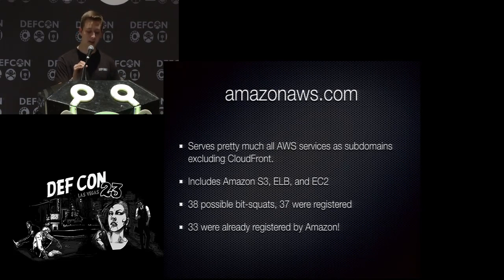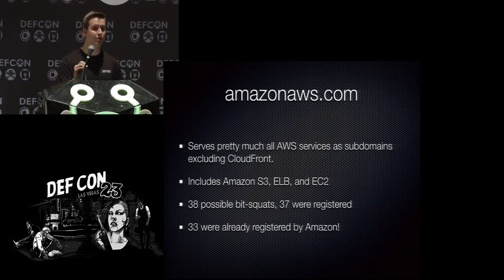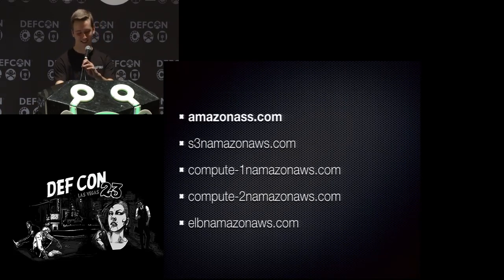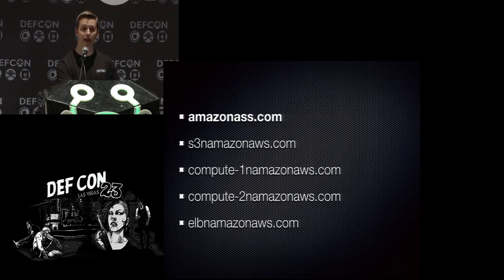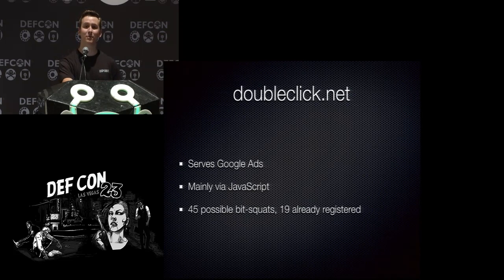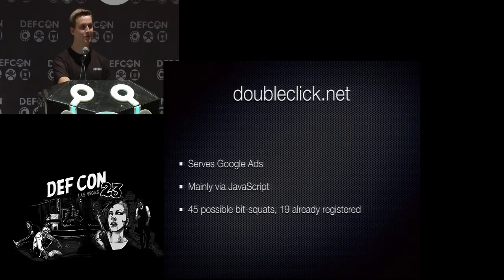The remaining few were registered by someone else, except for one — amazonask.com. I wasn't satisfied with a single bit flip, so I also bought subdomain bit squats where the dot changes to an N for Amazon S3, EC2, and Elastic Load Balancer. Moving on, I took on doubleclick.net — Google's ad network, which serves ads primarily over JavaScript, making it a great target. There were 45 possible bit squats, 19 already registered, so I registered the other 26. I then hit apple.com — being a short domain, many flips were already valid sites, so I was only able to grab one: appleg.com.